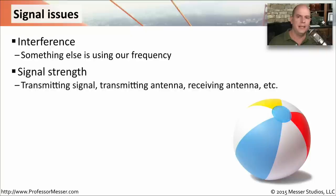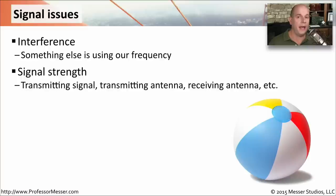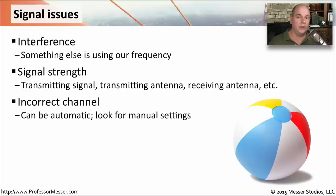We might also want to think about signal strength. We may be far away from the access point, or the signal from our device just isn't strong enough to reach it and communicate. The antennas we're using may not allow communication to the access point and back. You might also have the access point set to the incorrect channel. Some access points will try to find open frequencies automatically, but you often want to manually set those in the access point's configuration.